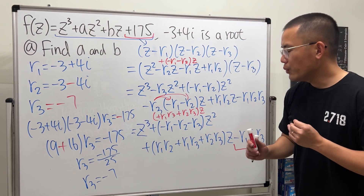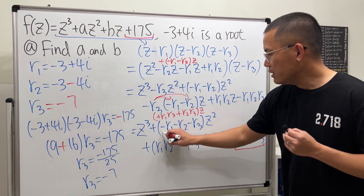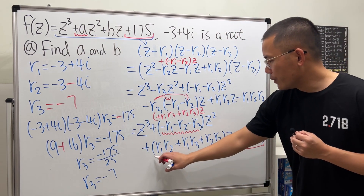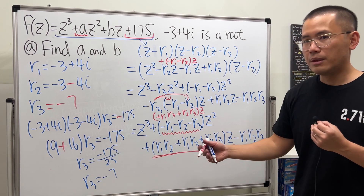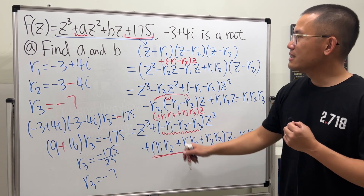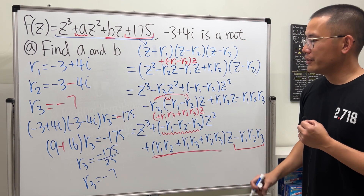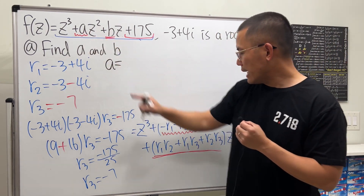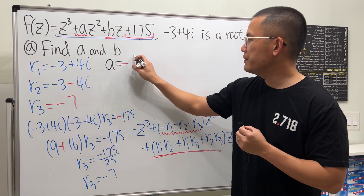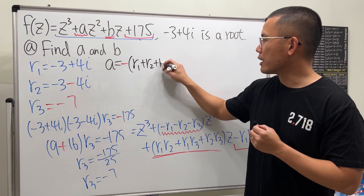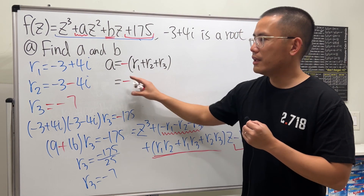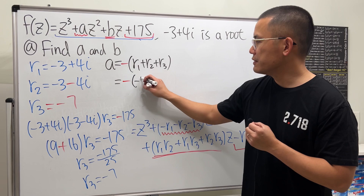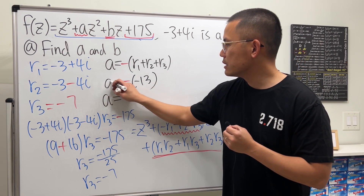Now for a: we have a = negative(r1 + r2 + r3). Adding r1 and r2: negative 3 plus 4i and negative 3 minus 4i, the imaginary parts cancel giving negative 6, then plus negative 7 gives negative 13. So a equals positive 13.